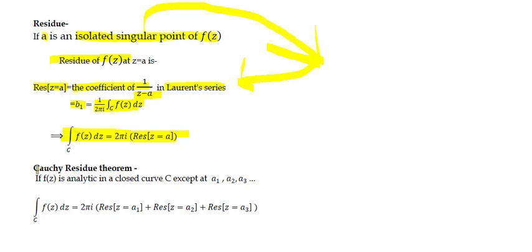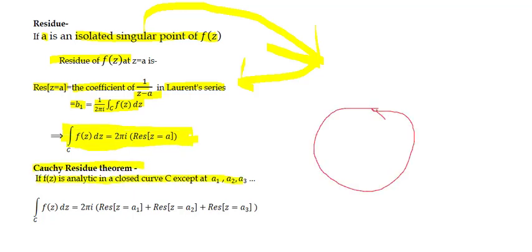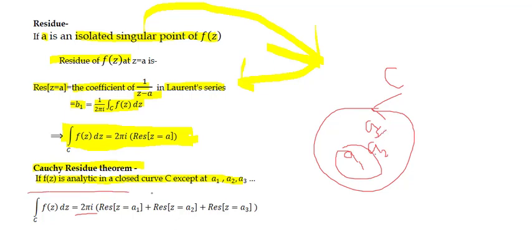Now we can state the Cauchy Residue Theorem. In general, if f(z) is analytic in a closed curve C except at some finite number of singular points a1, a2, a3, and so on, then the integral along C of f(z) dz equals 2πi times the sum of residues at a1, a2, and a3. This is called the Cauchy Residue Theorem.